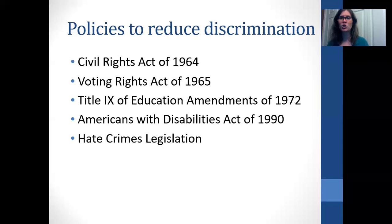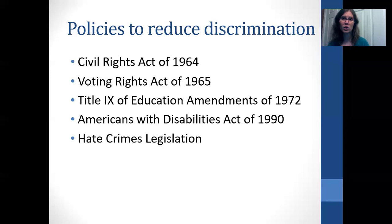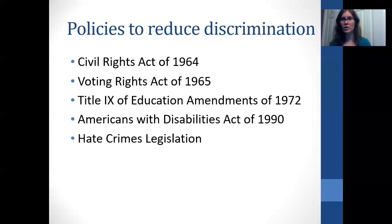The Americans with Disabilities Act of 1990 prohibits discrimination based on disability status and requires that certain buildings be ADA accessible, and that places of employment provide reasonable accommodations for individuals with disabilities. There's also hate crimes legislation, which provides additional penalties when a crime is committed because someone is part of a protected class — such as being assaulted because of their gender, race, or sexual orientation — resulting in a larger sentence than for the same crime without that targeting motive.